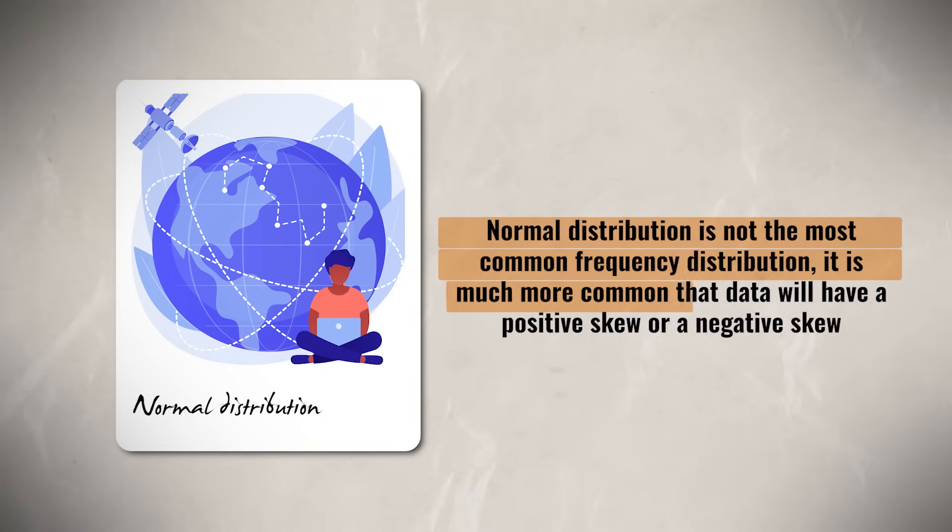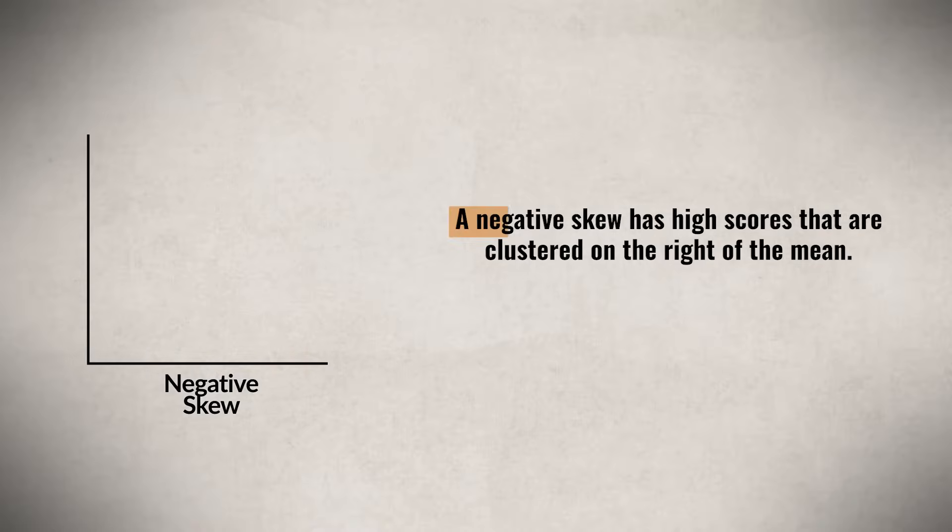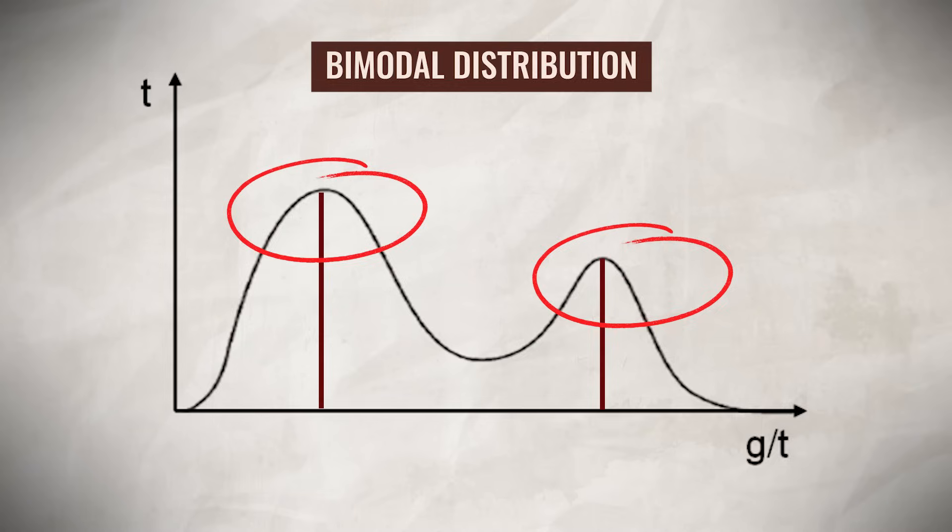It is much more common that data will have a positive skew or a negative skew. Positive skew occurs when scores are low and clustered to the left of the mean, while a negative skew has the highest scores clustered on the right of the mean. You also might see a bimodal distribution, which is when a distribution has two modes, causing the distribution to have two peaks.